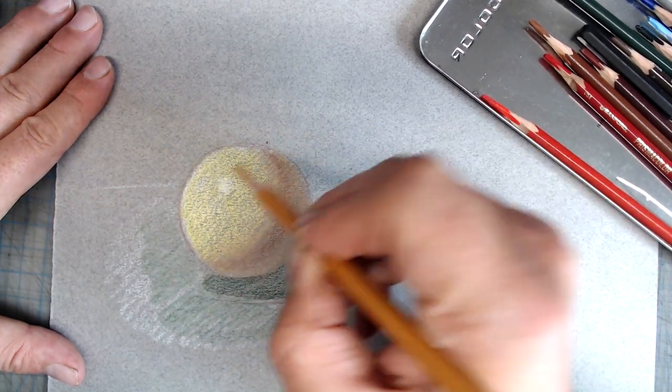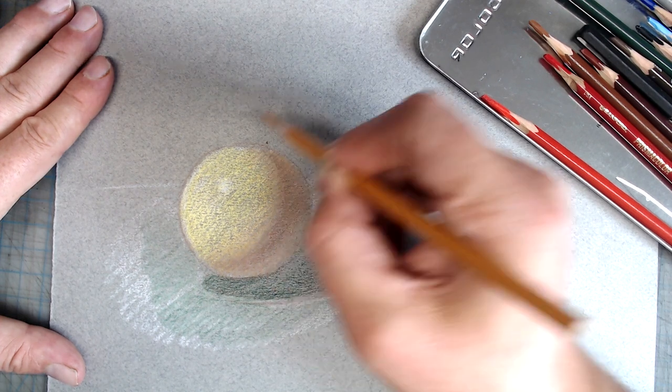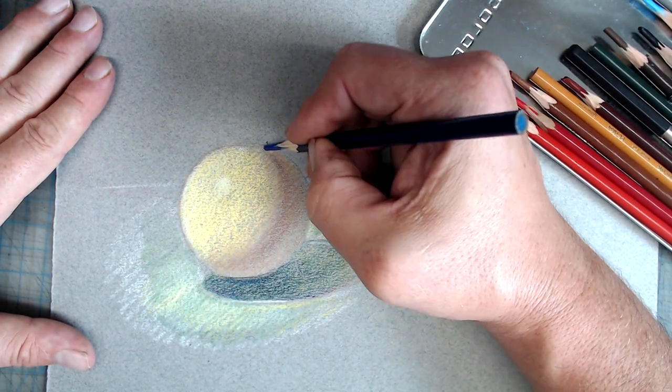At this point, I alternate between adding layers of white, and adding additional color saturation, until I have the value and color and opacity I'm looking for. Here's the completed drawing.